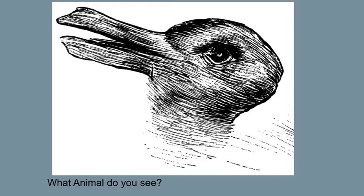So the first optical illusion is a pretty famous one. I want to find out what animal do you see? This is drawn in a very specific way that people usually see one of two animals, but the trick is that both animals are drawn there. It's probably a rabbit or a duck that you see, but really no one's wrong because it's drawn so both can be seen.